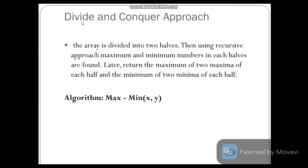The second approach is Divide and Conquer. The array is divided into two halves. Then, using a recursive approach, the maximum and minimum numbers in each half are found separately. Later, we return the maximum of the two maxima of each half, and the minimum of the two minima of each half.